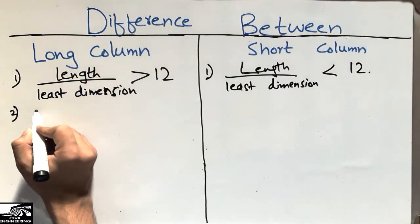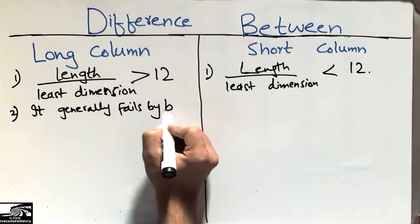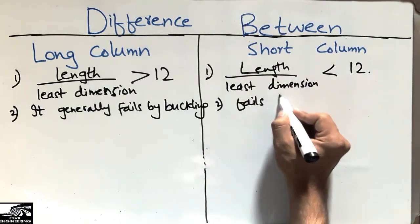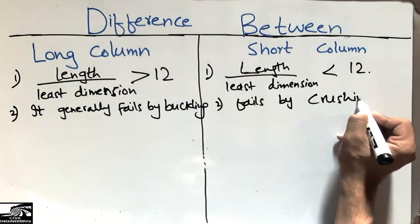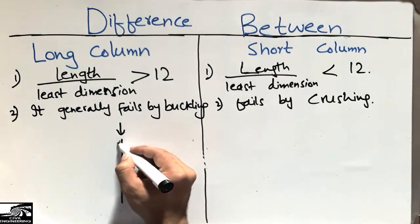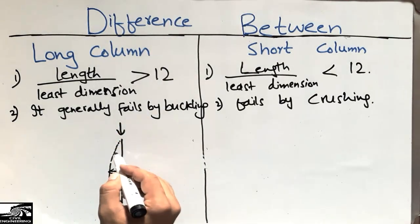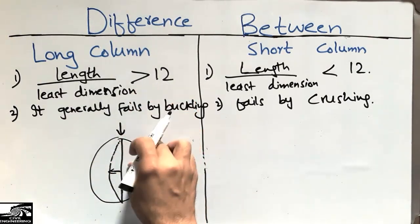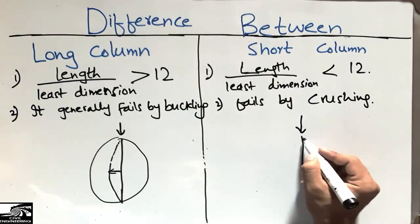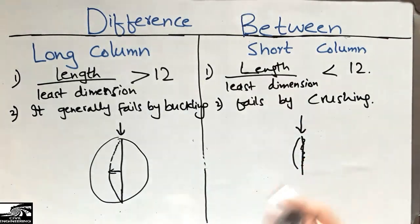The second difference is the failure mode. Long columns generally fail by buckling — when a load acts on a long column, the column buckles and changes position. Short columns generally fail by crushing — when a load acts on a short column, it is crushed and breaks down without buckling. That is why we say short columns fail by crushing behavior.